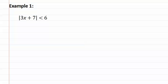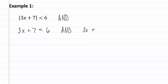Here's example one. It is a less than, so it is an and inequality. We first write it as 3x plus seven is less than six, and 3x plus seven is greater than negative six.